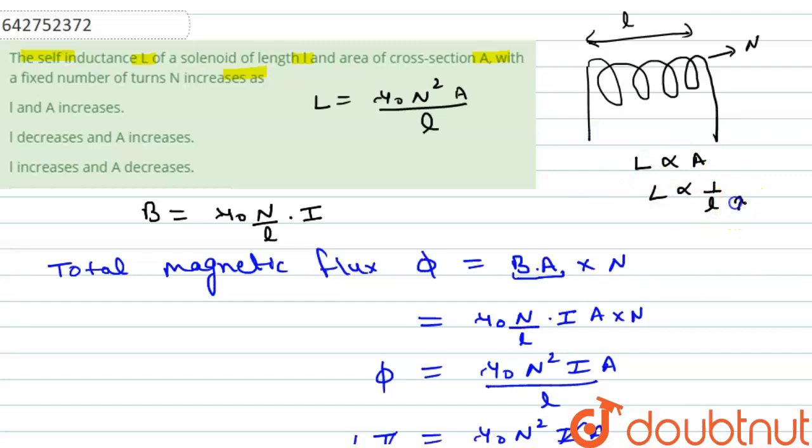So if length will increase, then inductance will decrease. And if area will increase, then inductance will increase. So if L and A increases, this is incorrect option.